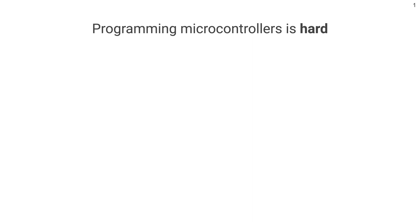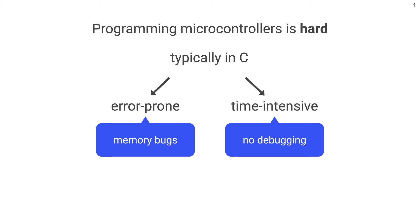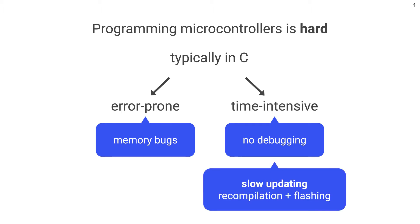Programming microcontrollers is hard, and is typically done in low-level languages such as C. But development in these languages is error-prone; especially memory bugs are very hard to track down, which makes development very time-intensive. Additionally, on microcontrollers there is often no debugging available, which makes finding bugs even harder. And every time we make a change to the program, however small, we need to recompile everything and re-upload the entire codebase to the embedded device, which is a very slow process.